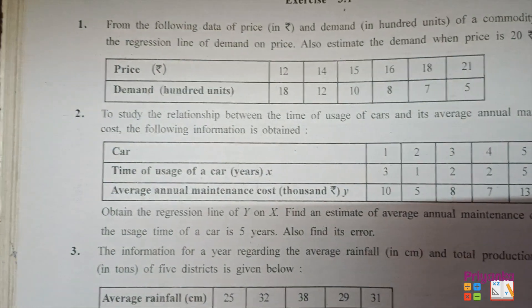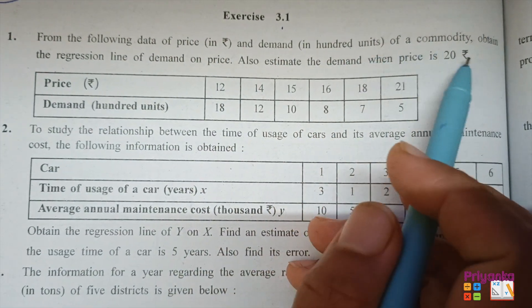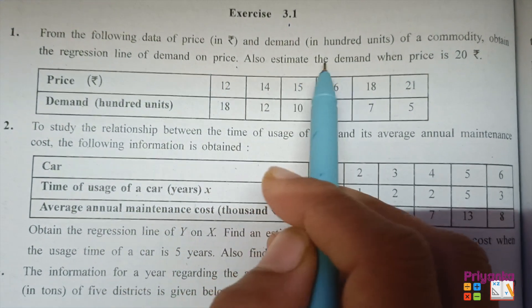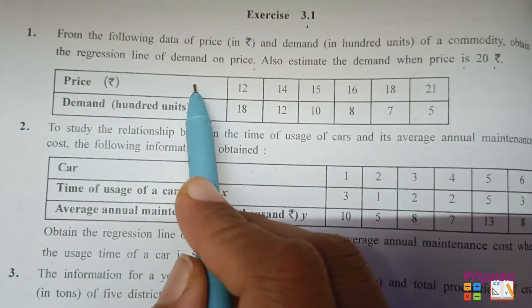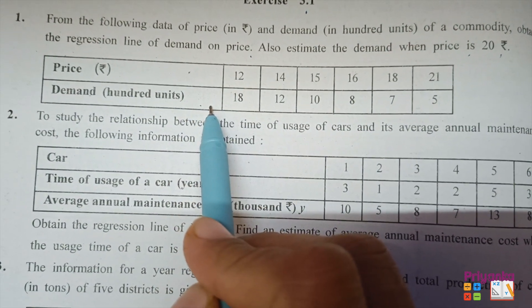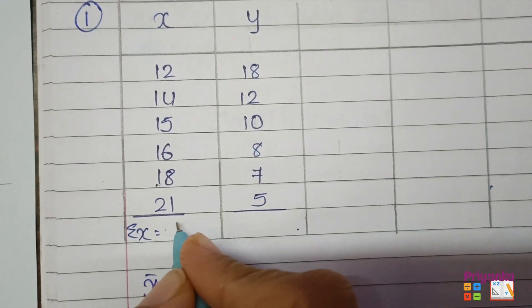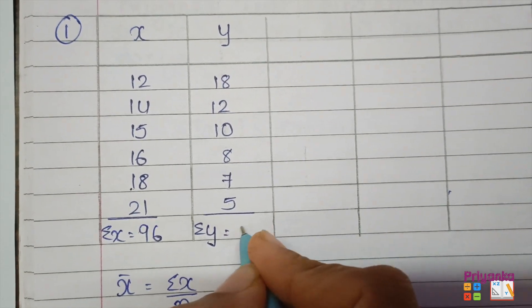Chapter 3 linear regression, Exercise 3.1, starting from page 124. Question 1: From the following data of price (x) and demand in 100 units (y) of a commodity, obtain the regression line of demand on price and estimate the demand when price is 20. The price is denoted as x and demand as y. First, make the total: σx = 96 and σy = 60.